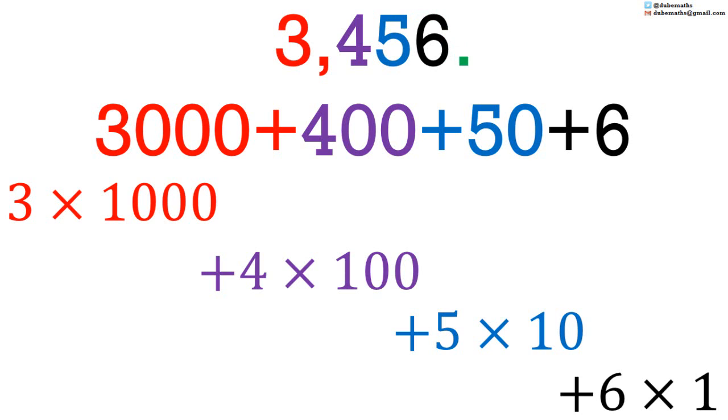The number immediately to the left of the decimal point, in this case is 6, is multiplied by 1. Then the number immediately to the left is multiplied by 1 multiplied by 10, which is 10. The next number is multiplied by 100, and so forth.